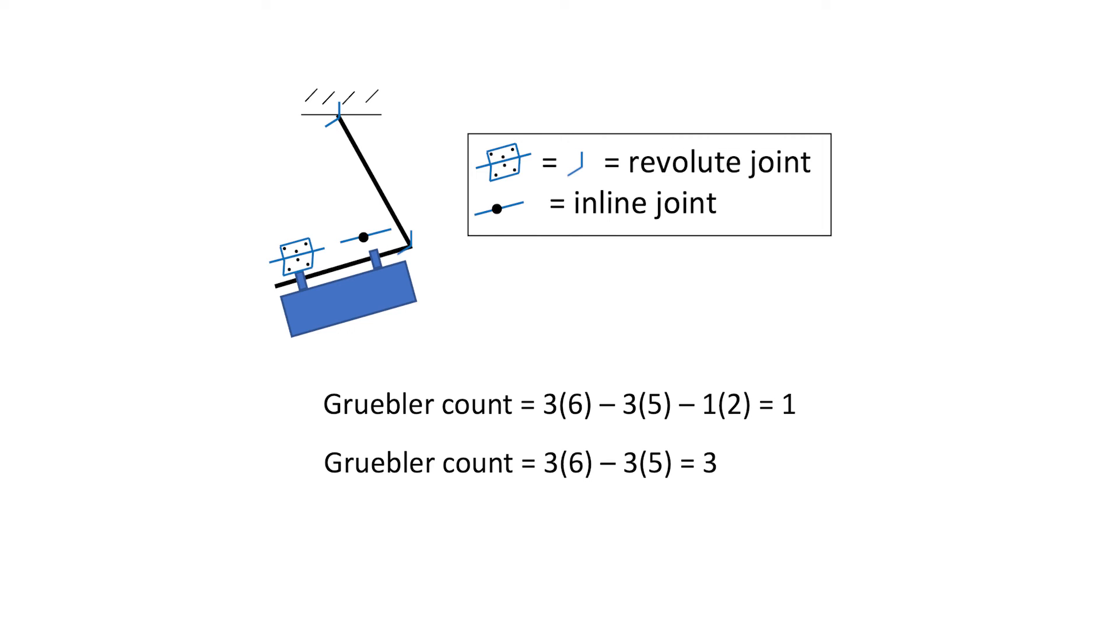The inline joint is redundant, and if we removed it we would have a Gruebler count of three. Now by inspection we can see that the mechanism has three independent motions: the two pendulum rotations and the rotation of the plate about one of the links. Thus the Gruebler count gives the correct number of degrees of freedom, but only if there are no redundancies.